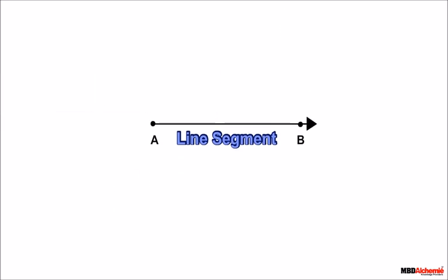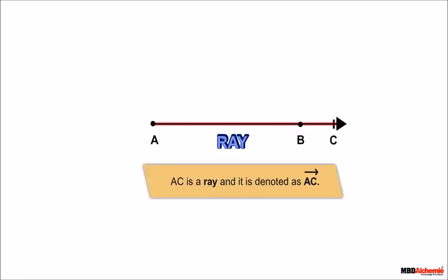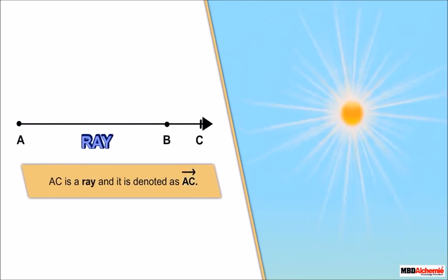If we extend this line segment indefinitely in one direction, we get a ray. A ray starts at a point and continues off to infinity. As it can be extended in one direction, we put an arrow on one of its ends. Here, we have ray AC, and it is denoted by a line with a single arrowhead over the top of the letters, like this. Think of the sun's rays — they start at the sun and go on indefinitely.